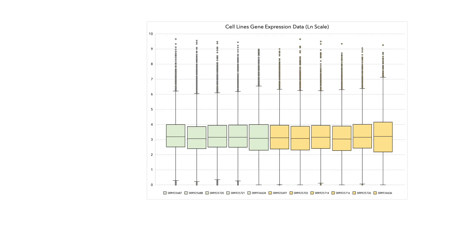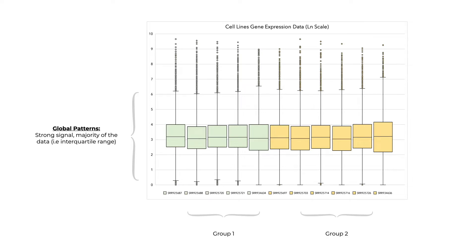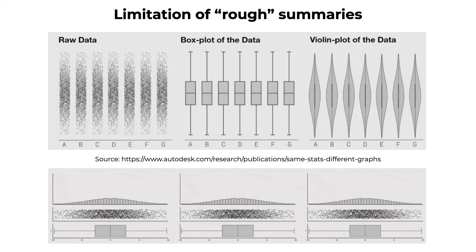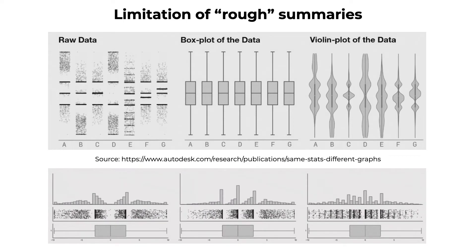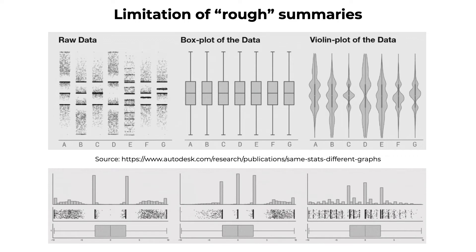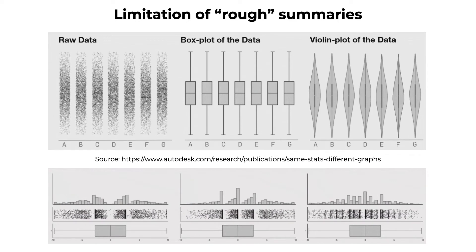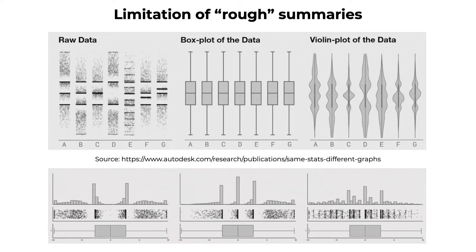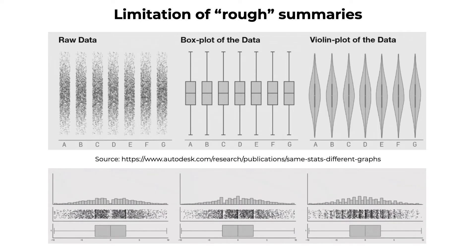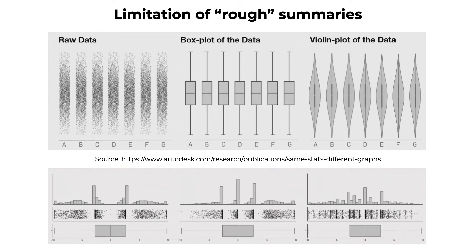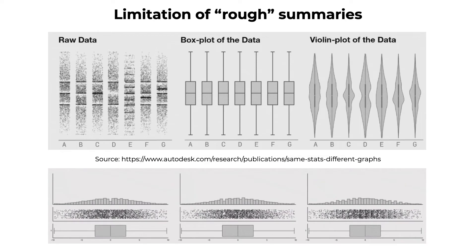A quick way to compare multiple samples and understand global patterns across the full data set is to visualize the data using box plots, where each box represents a sample. And if we color them by group, we can now see global comparison between these groups. But these rough data summaries can be very misleading, as we can see when we compare the information in box plots and histograms. Box plots are useful to spot the strongest signal present in each sample, but they also reduce a lot of data to minimum information. Complex visualizations like violin plots make it much more difficult to compare global patterns between samples.